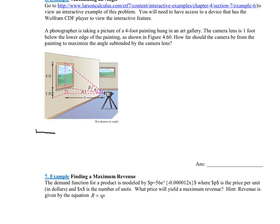So I'm going to extract these pictures for you so you can see them. Here's the small triangle: it has a 1 here because it's 1-foot below the lower edge, so this is X, and this angle right here they're calling alpha. And then the big triangle: they're calling this angle theta, and this side has to be 4 plus 1, so that's 5, and this is X.